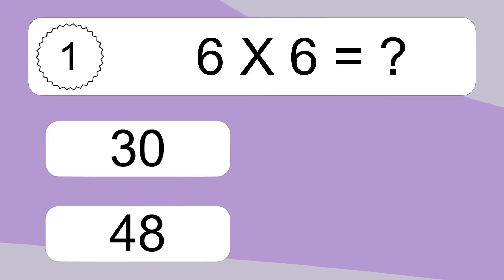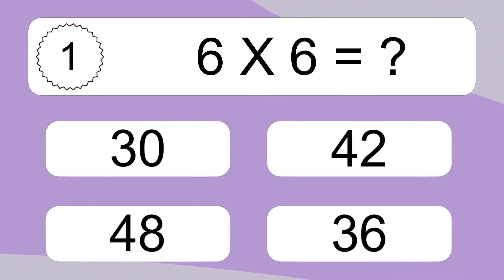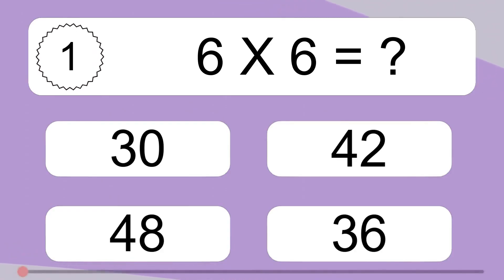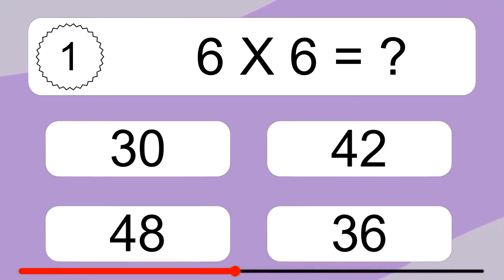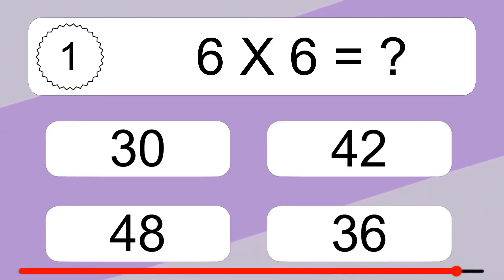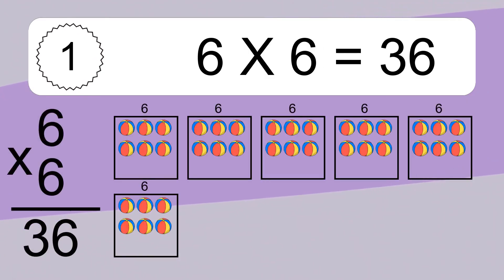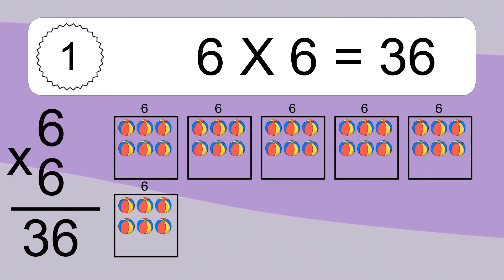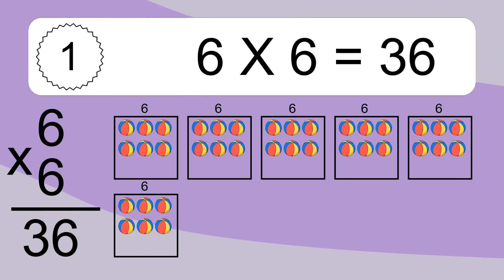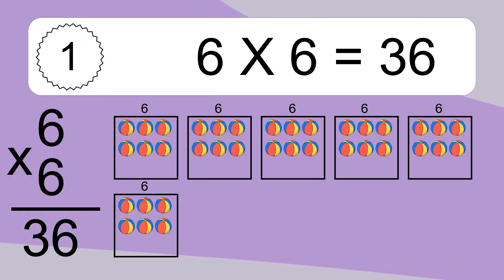Six times six equals what? Six times six equals 36. We have six boxes, and each box has six colorful balls inside. If you count all the balls in all the boxes together, you will have six times six balls. This equals 36 balls.